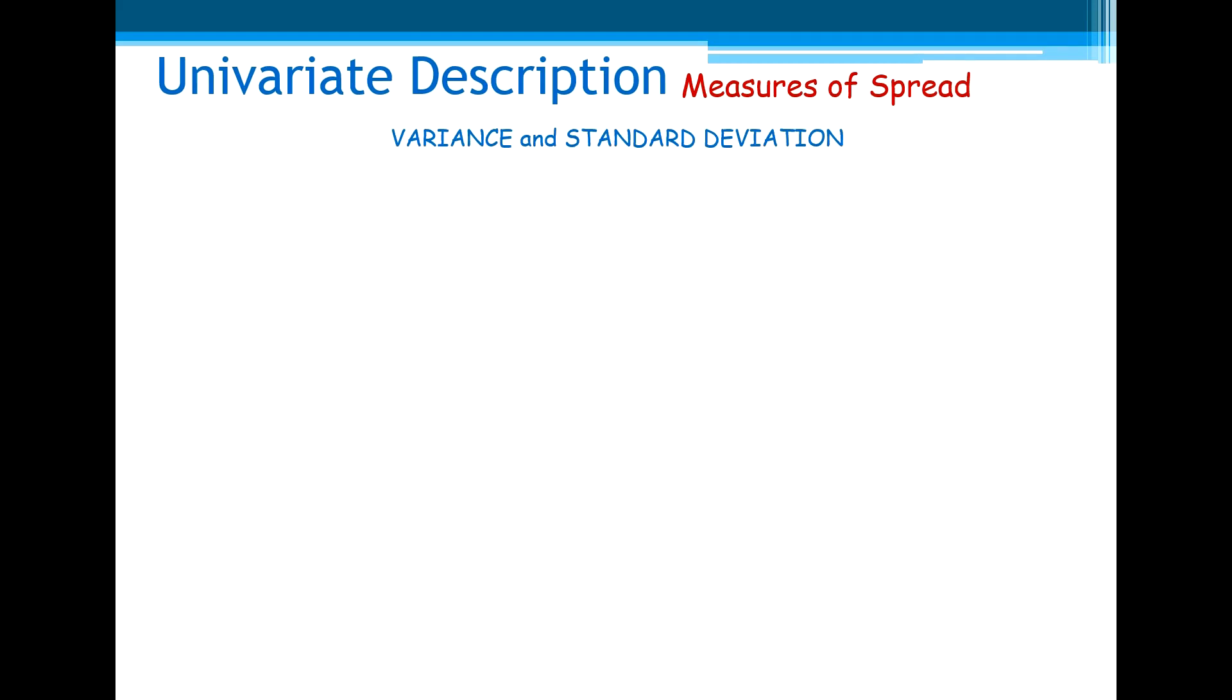Now we'll see how the values are spread around the mean through the measures of spread: more dispersed, less dispersed around the mean. Now we start by the variance and standard deviation.